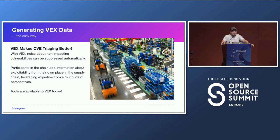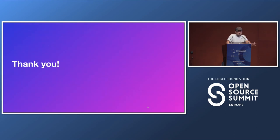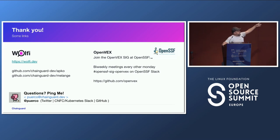Our hope is that the new channel of information VEX is going to open will enable this sort of thing fully automatically. There's still some work needed, especially around auto-discovery and trust, but things are moving really fast with many interested parties. Open VEX is a project incorporating into the OpenSSF with bi-weekly meetings. You can join us on the OpenSSF SIG OpenVEX channel on the OpenSSF Slack. That's the Wolfi main repository and the tooling you can use to generate images.